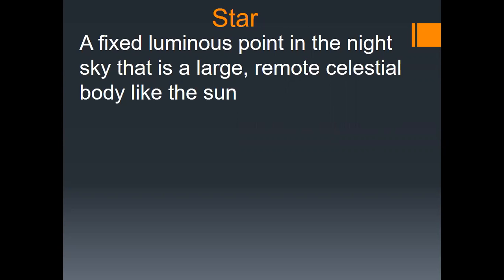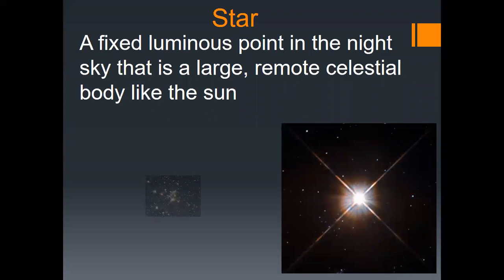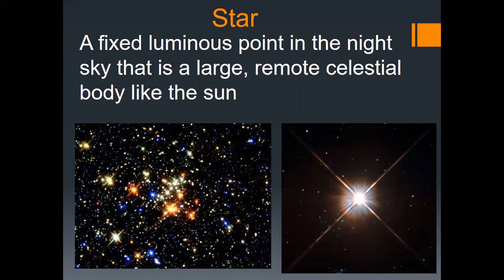A star is a fixed luminous point in the night sky — a large, remote celestial body like the sun. When you're looking at the sky, you see a nice distribution of stars. Now, we are living in an urban area, so it's hard to see really bright stars in the sky because they're dimmed due to street lights and other building lights.